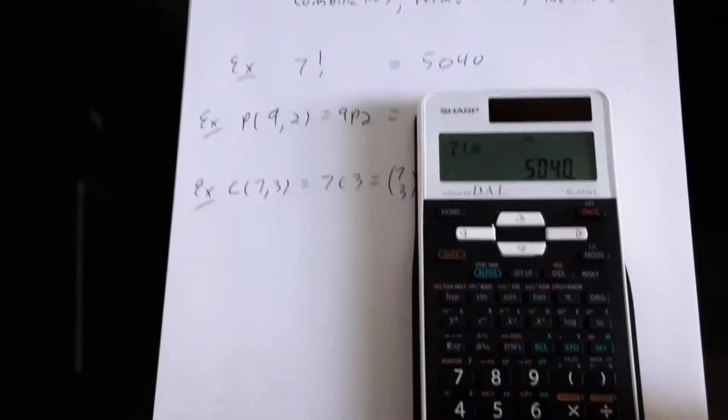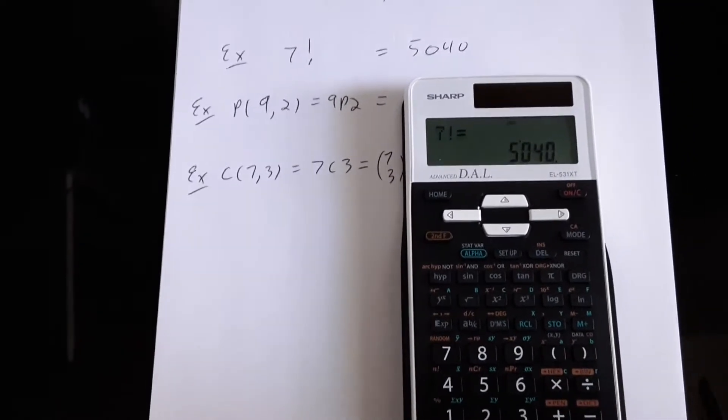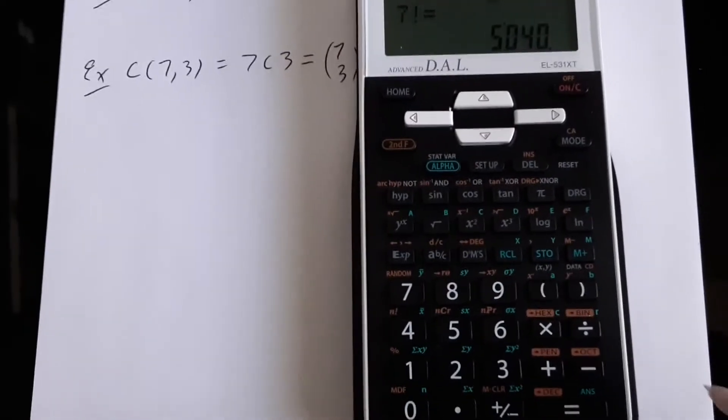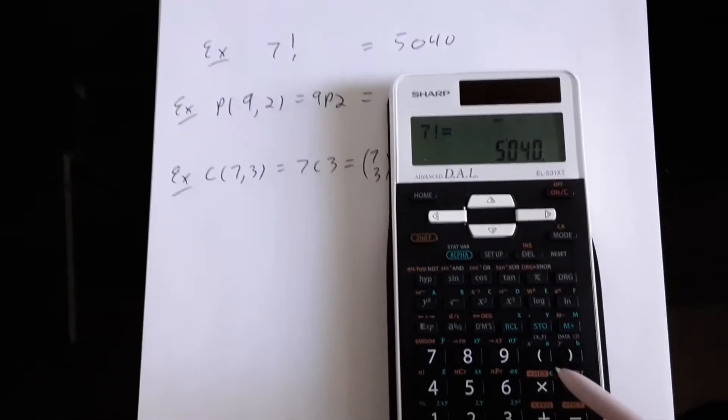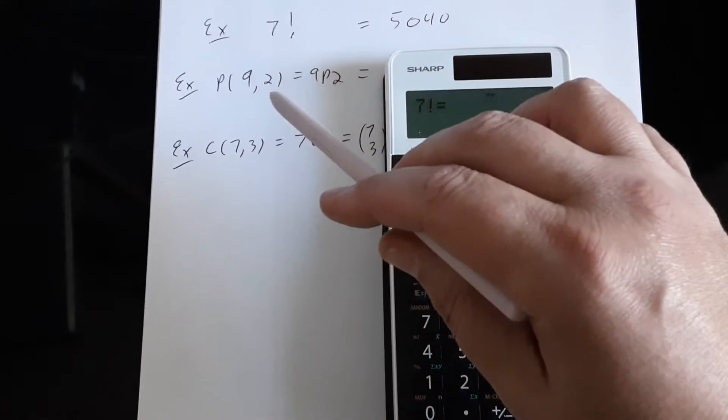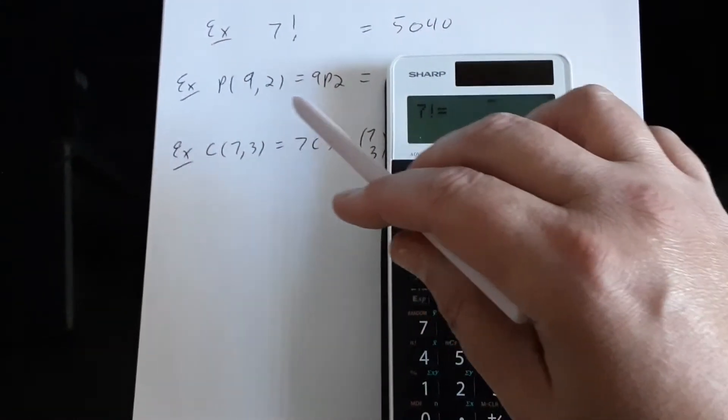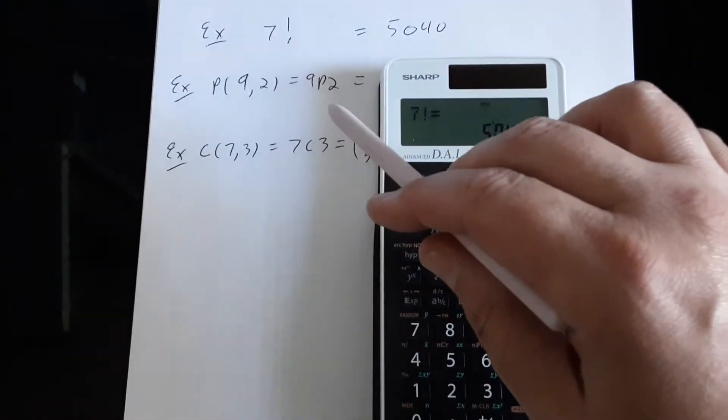For permutations, the permutation function is on our calculator just above the number 6. You can see NPR. Remember that we have two different ways of writing it. We could write it as 9P2 or P92. These both mean the same thing.